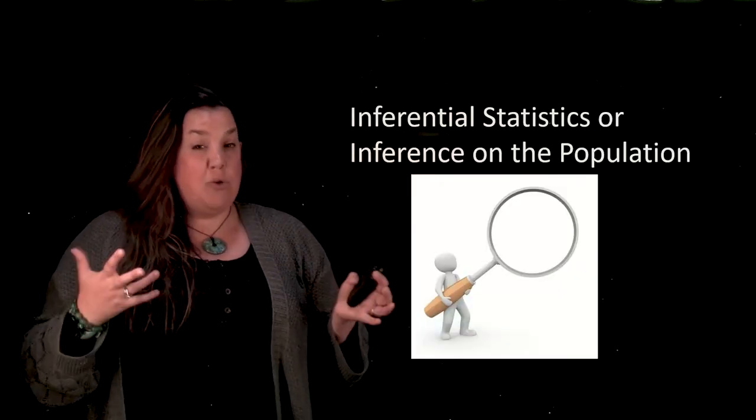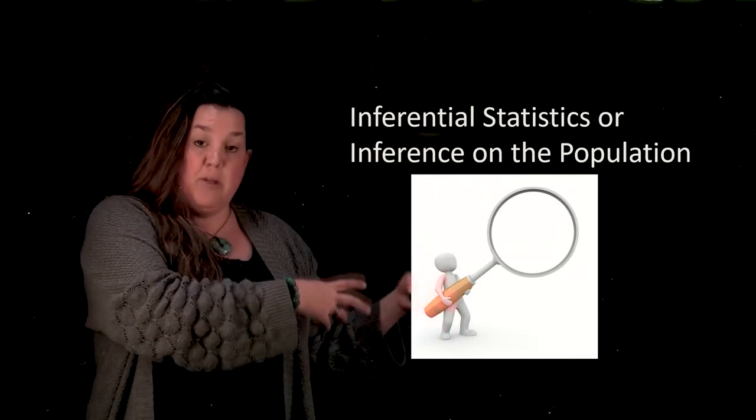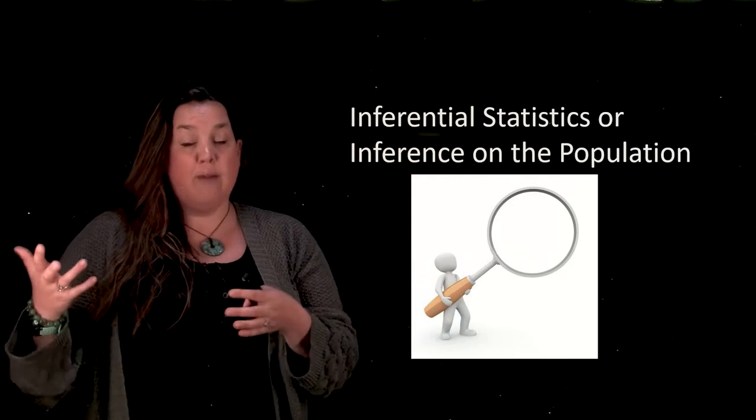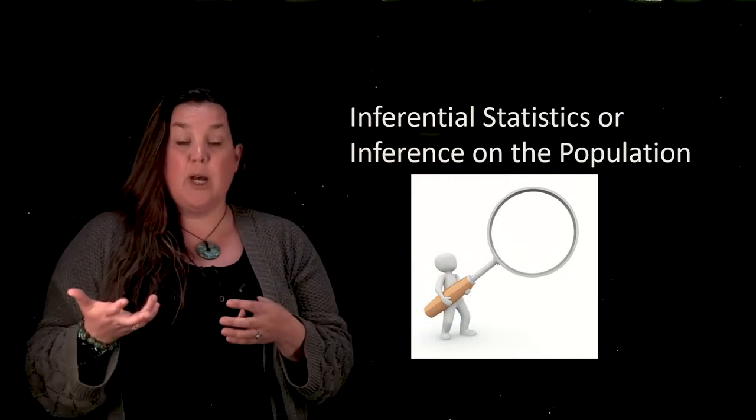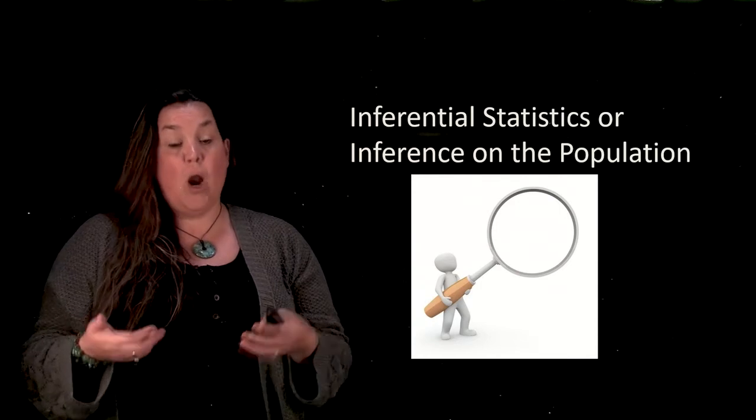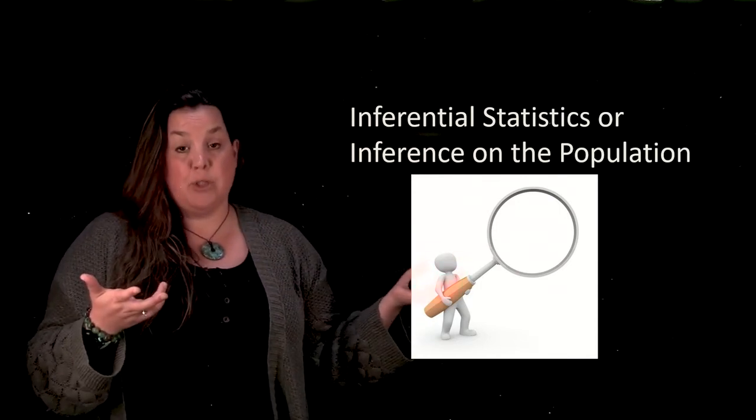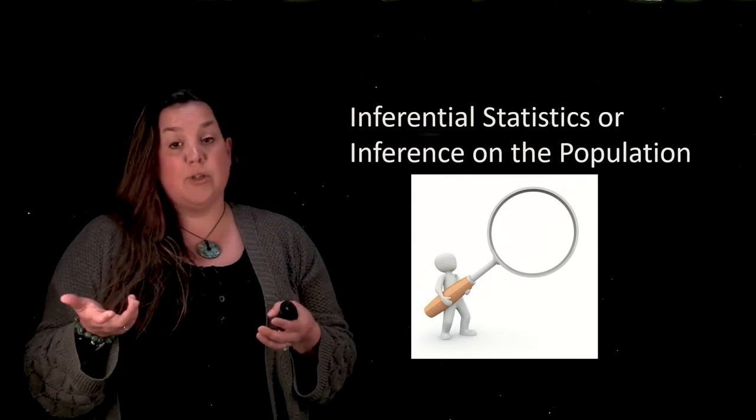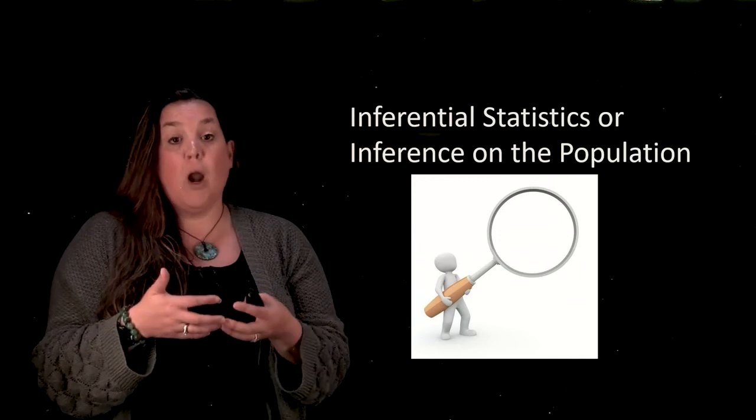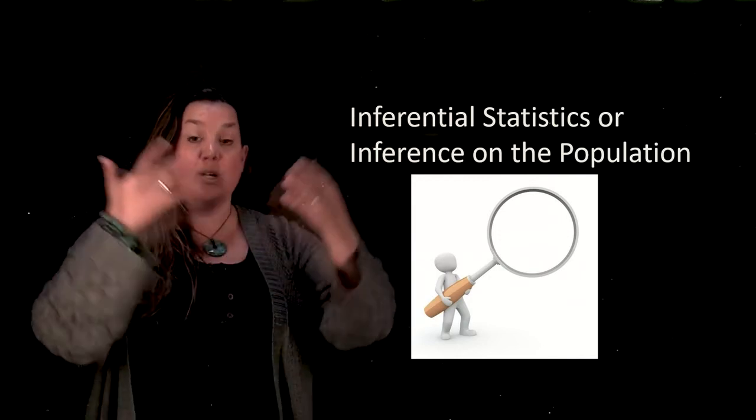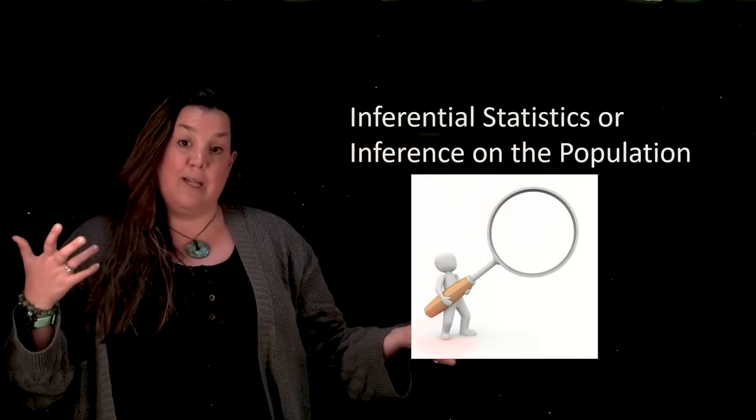Then what we usually do is take descriptive statistics and use it to make an inference on the population. So if I had the average age of that hundred GVSU student sample that I took and I said it was 20.4, I might be able to make an inference on the population based on that information. So I could say maybe because the average age of the GVSU student sample that I found was 20.4, I think the average age of the entire GVSU student body is going to be between 19 and 21.